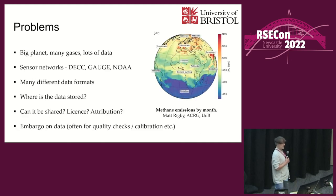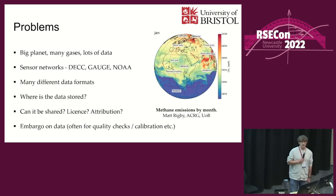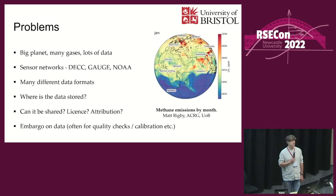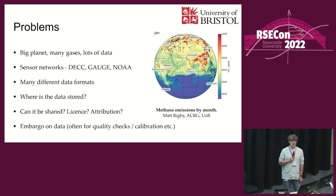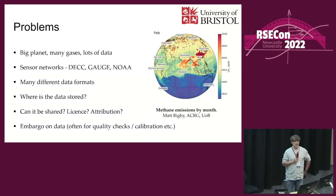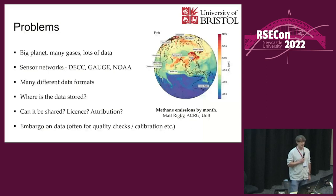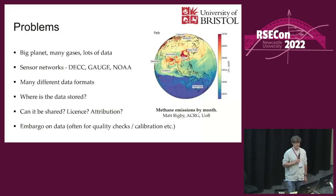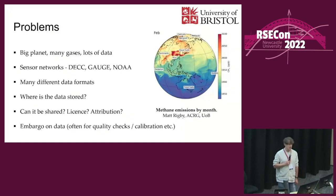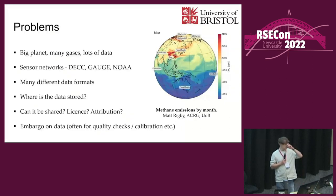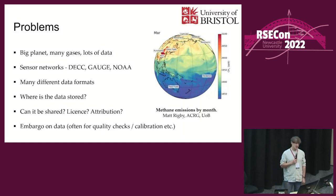So the problems: there are lots and lots of measurements - lots of different gases, an awful lot of data. There are lots of different sensor networks around the world, like DECC, GAUGE, NOAA, bringing in lots of data in different formats. The data is stored in lots of different places - on a server in a lab somewhere or a workstation - and it's probably just looked after by one researcher who doles it out. And then there's the question of sharing: what kind of license do you want to give it, and how can you cite it if you use it?